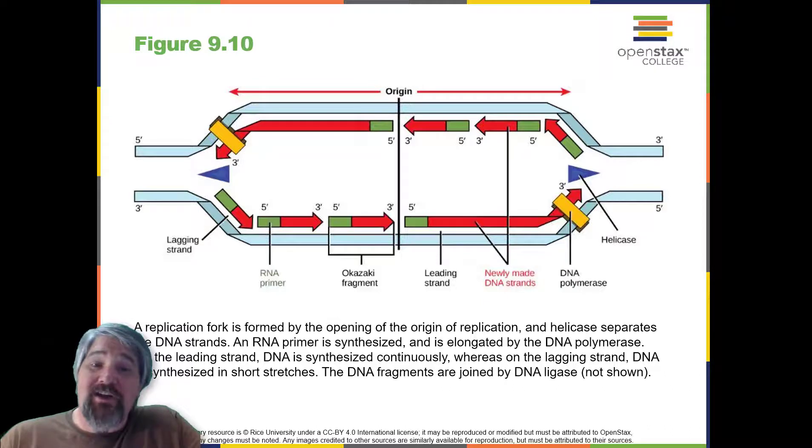One strand, which is complementary to the parental DNA strand, is synthesized continuously towards the replication fork, so the polymerase can add nucleotides in this direction. This continuously synthesized strand is known as the leading strand. Because DNA polymerase can only synthesize DNA in the 5' to 3' direction, the other new strand is put together in short pieces called Okazaki fragments. The Okazaki fragments each require a primer made of RNA to start the synthesis. The strand with the Okazaki fragments is known as the lagging strand. As synthesis proceeds, an enzyme removes the RNA primer, which is then replaced with DNA nucleotides, and the gaps between fragments are sealed by an enzyme called DNA ligase.